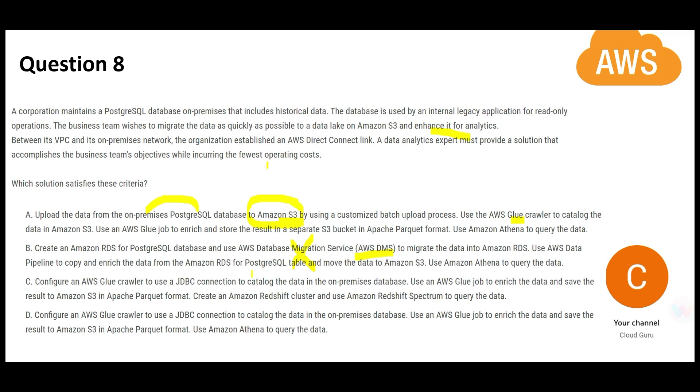This is an additional step bringing data to S3 and then using Glue crawler. We want fewest operating cost, so keeping that in mind I will reject this option. C and D are similar except towards the end. They are using Glue crawler first on on-premises databases—Glue crawler is able to access on-premises also—then they use Glue job to enrich the data, then save it in S3 in Apache Parquet format. Nowadays, any project we save data in Parquet format because it requires less storage space, it is columnar, so reads and writes are faster.